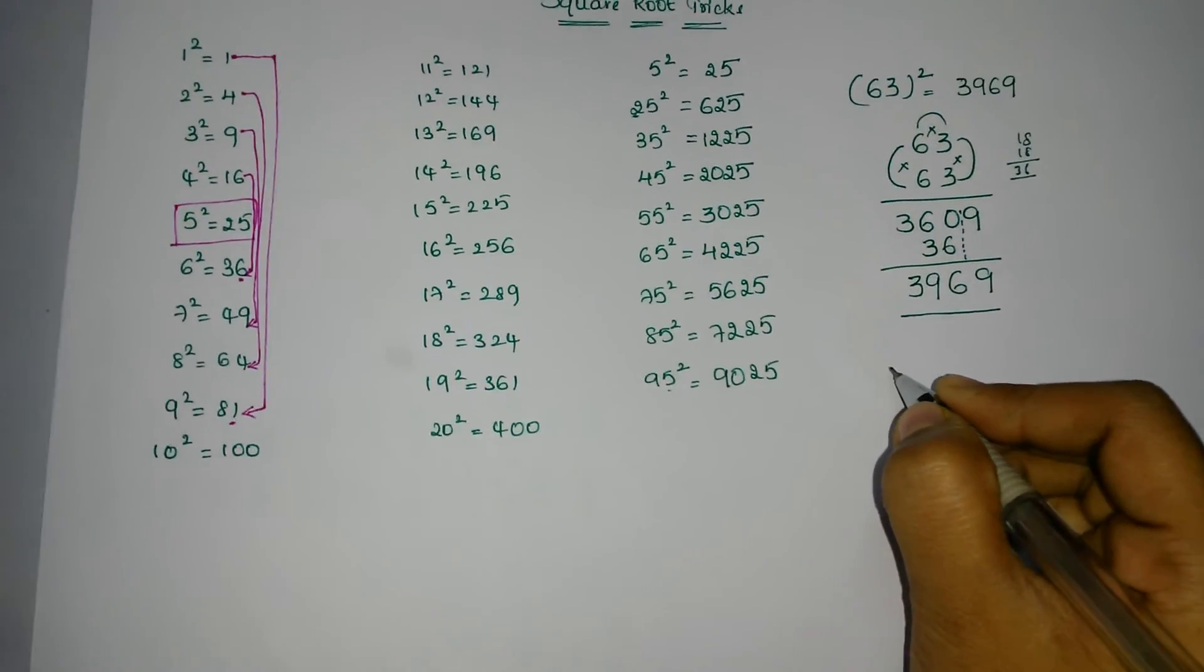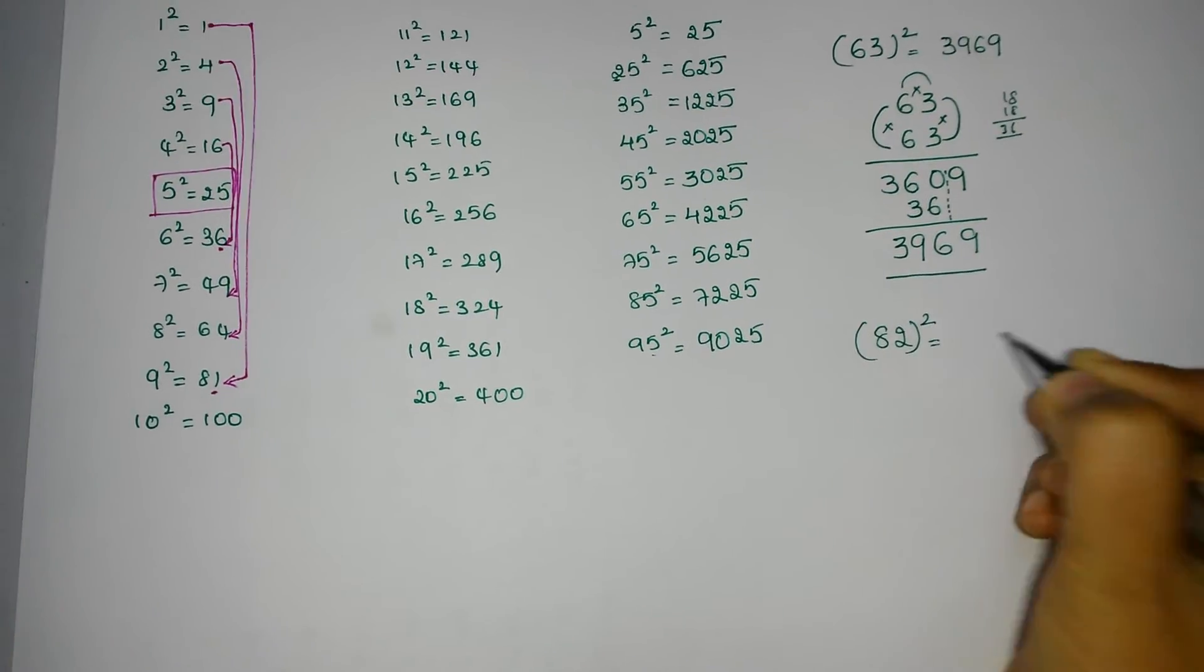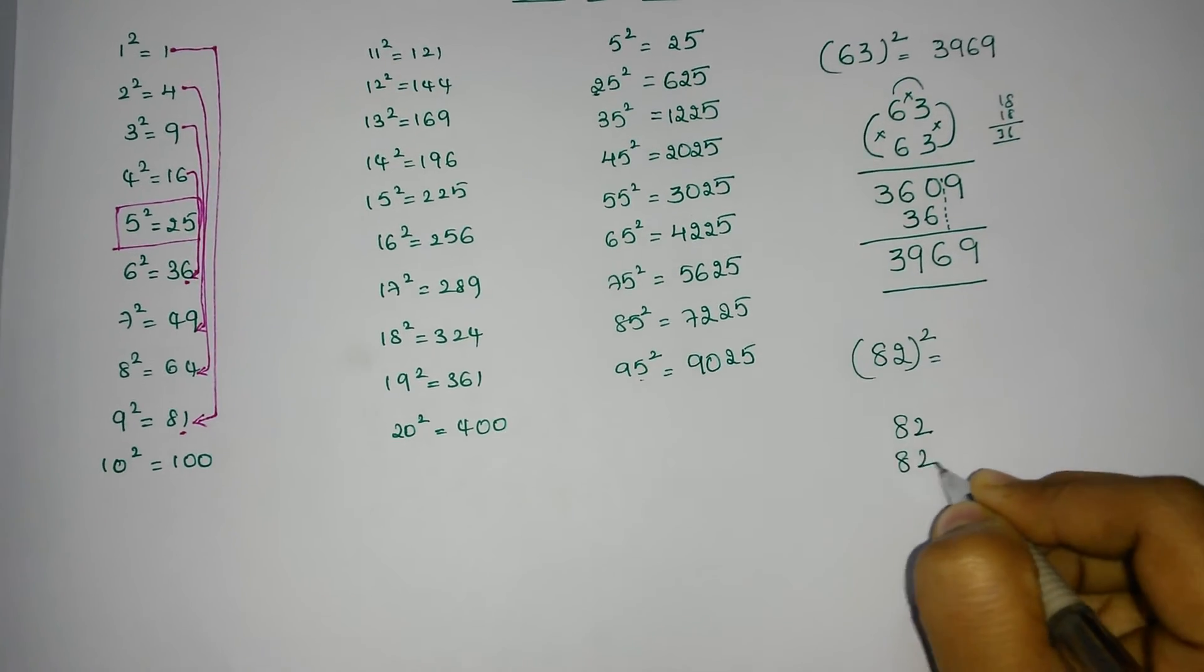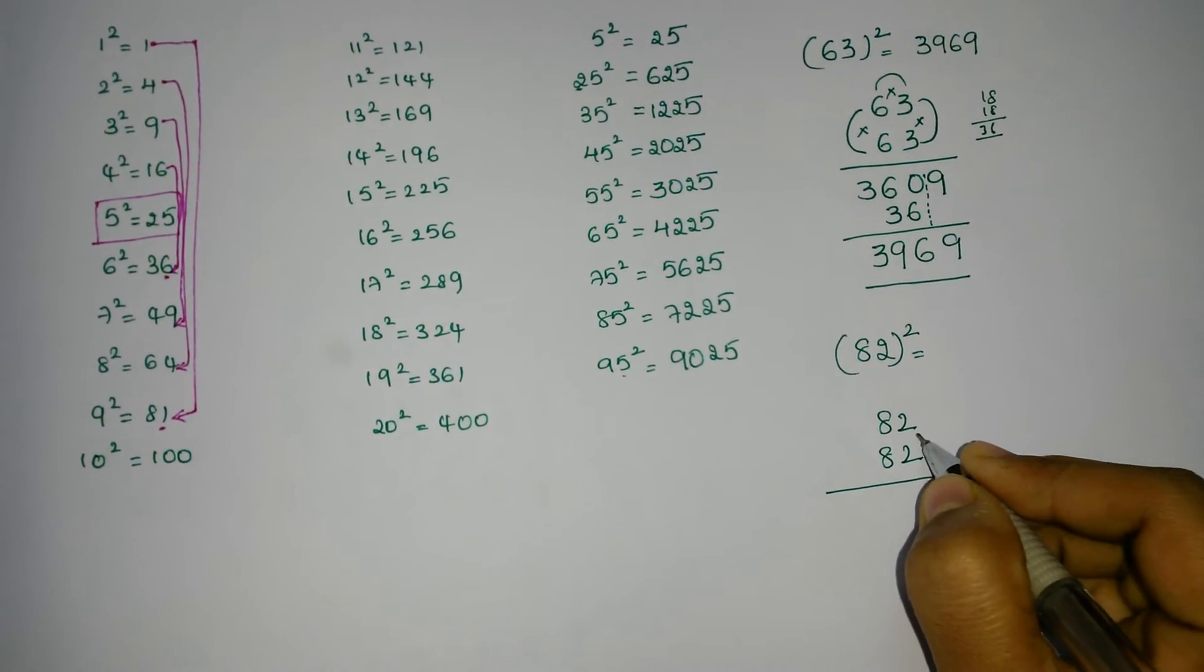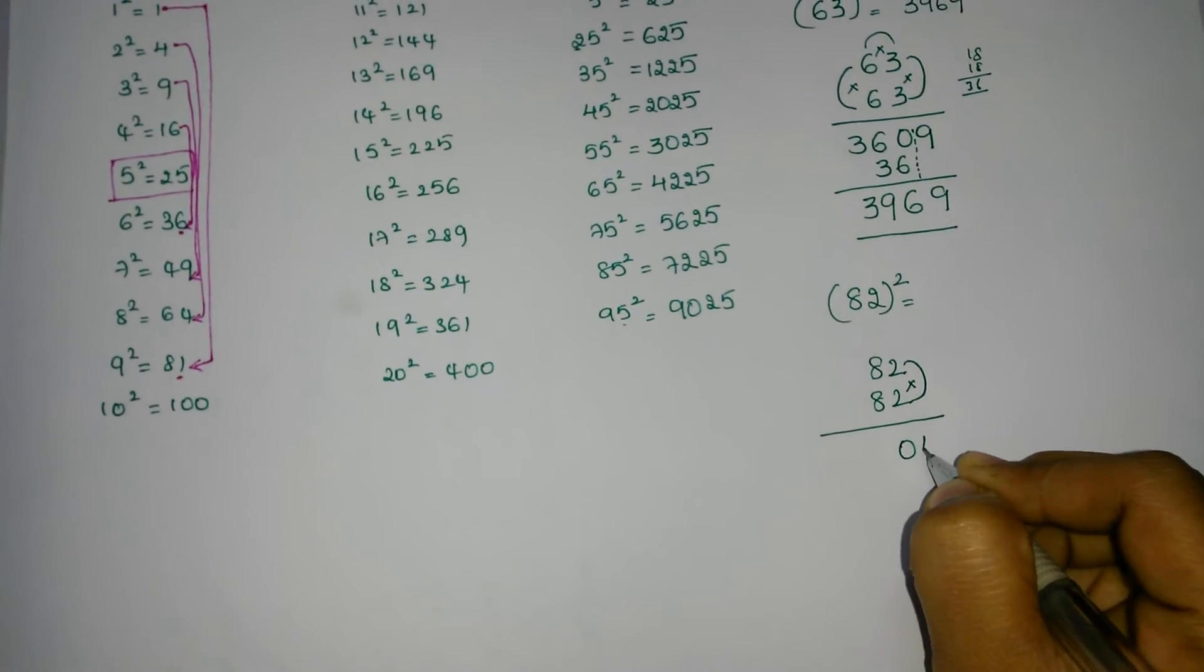In the same way, I will explain another example: 82 square. 82 is 82 and 82. Now multiply these two terms: 2 into 2 is 4, so write as 04.